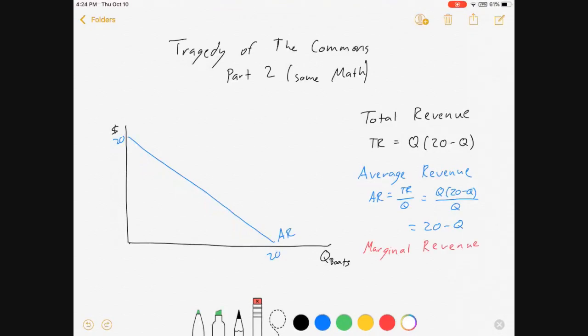The next thing we're interested in is marginal revenue. Marginal revenue is defined as the derivative of total revenue with respect to quantity, or change in total revenue over change in quantity, either way. In this case, that's 20 minus 2Q, which looks like that. Marginal revenue, and it intersects at 10 there.